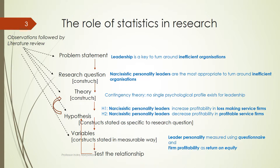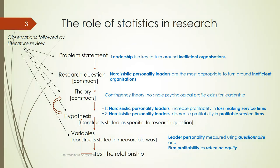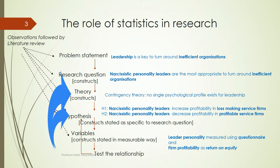We state real-life statements to test that theory in relation to our specific question — narcissistic personality leaders — and inefficient organizations, specifically loss-making versus profit-making organizations. Based on that hypothesis, we develop variables: leader personality and profitability. We measure leader personality using a questionnaire and get scores from the question items. We measure profitability using return on equity, and we look at the relationship between these two variables to test our hypothesis. Accordingly, we inform the hypothesis and the theory.